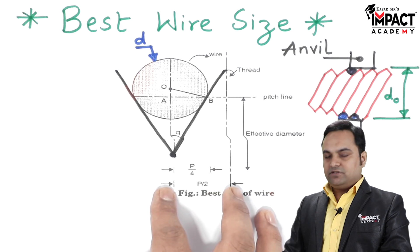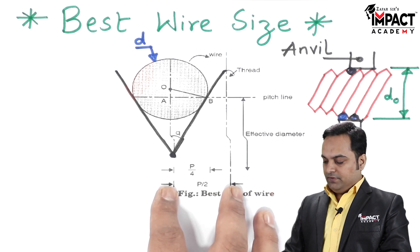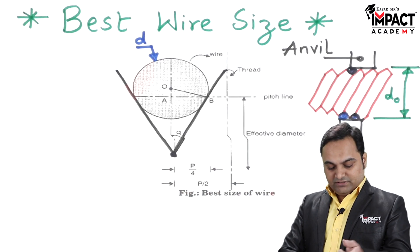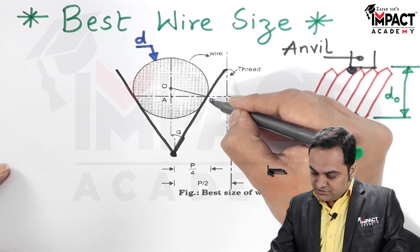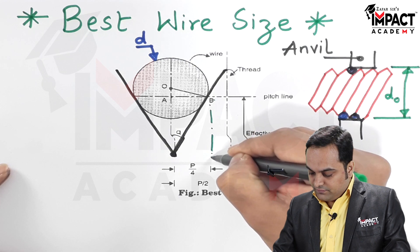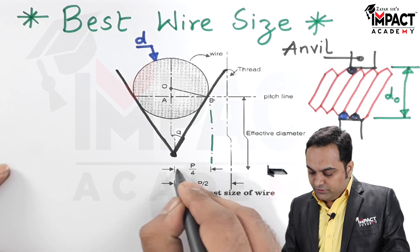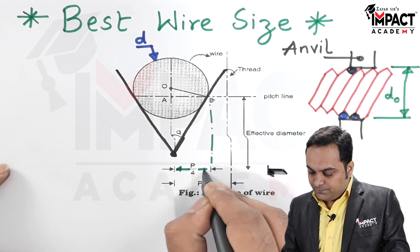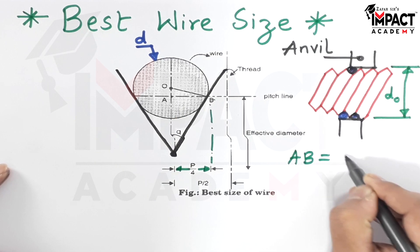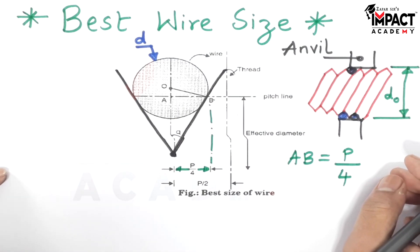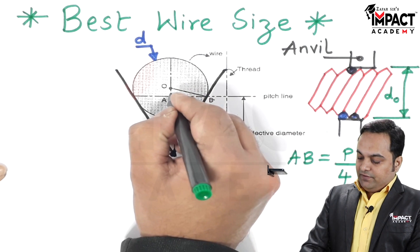From the center of the wire up to the center of the thread, we can see here the distance is P by 2, which is pitch by 2. And the distance AB we can see here, from A to B, this distance is half of P by 2, which means it is P by 4. That is, AB distance is equal to P by 4.